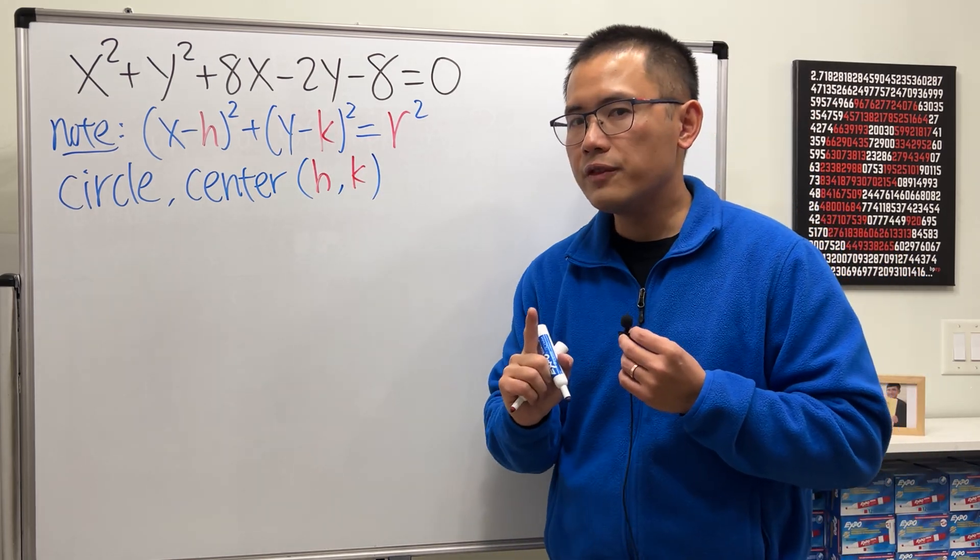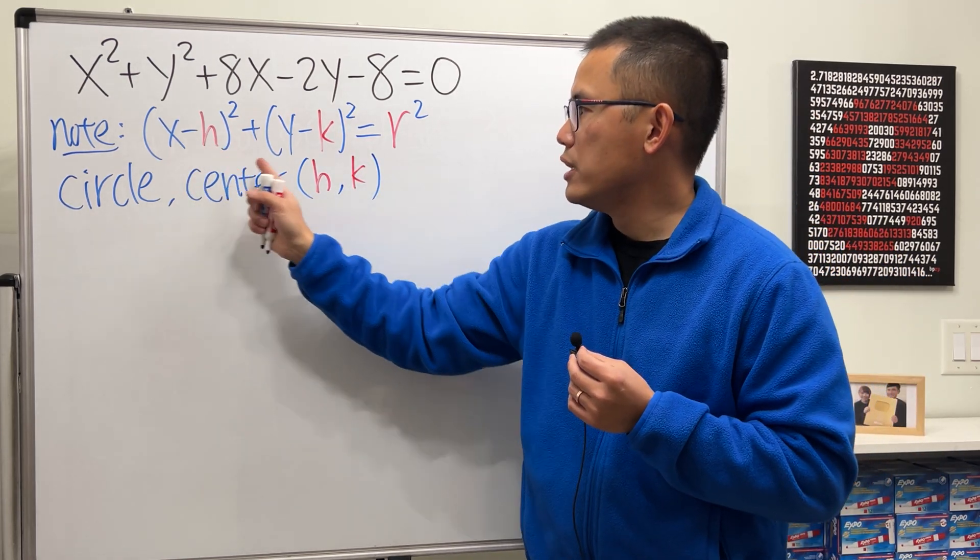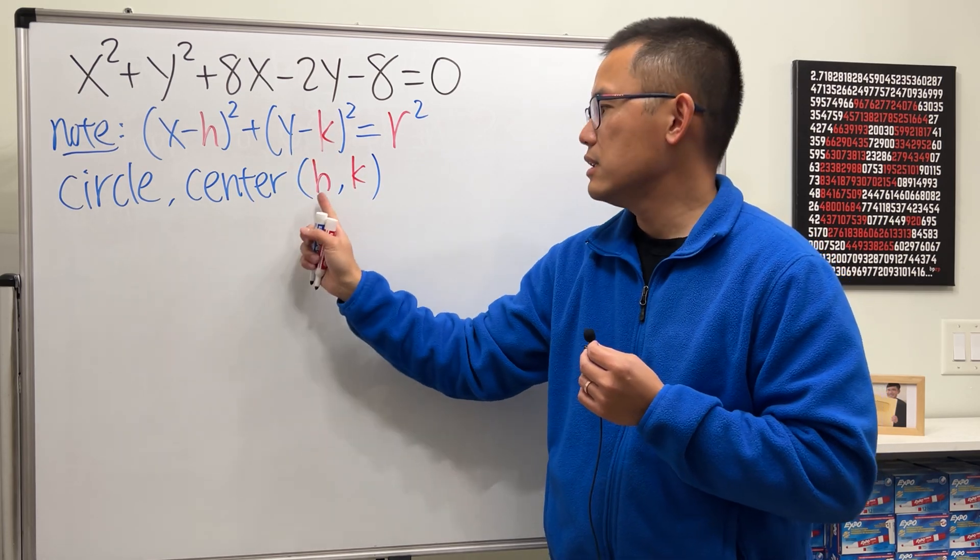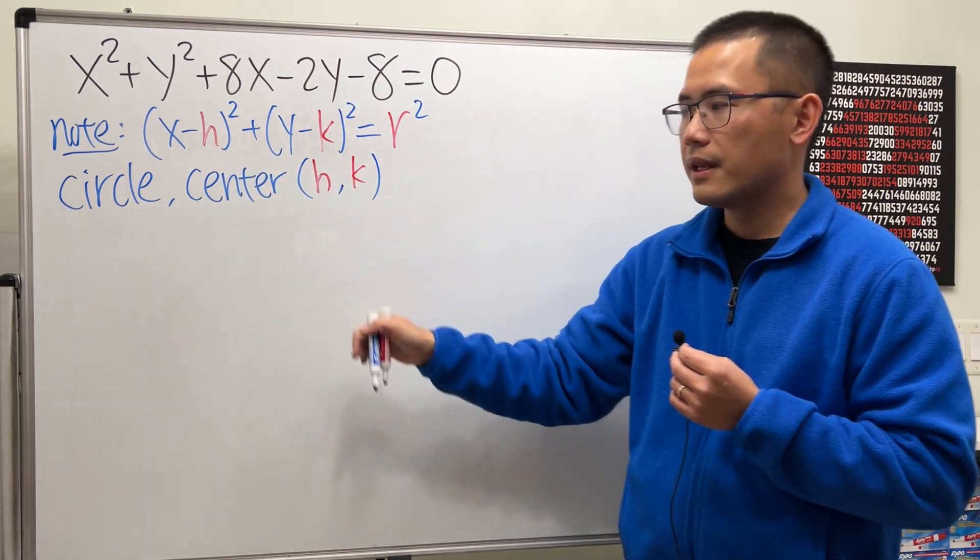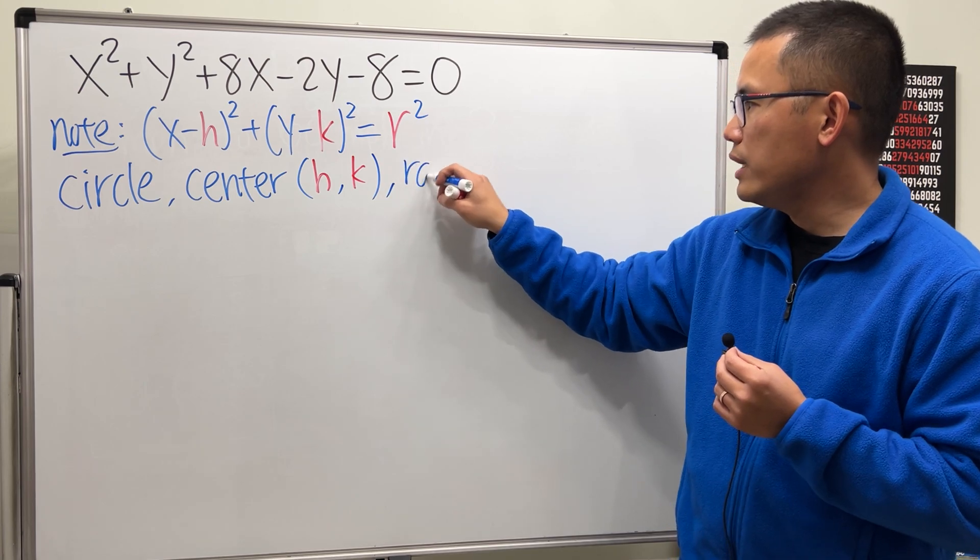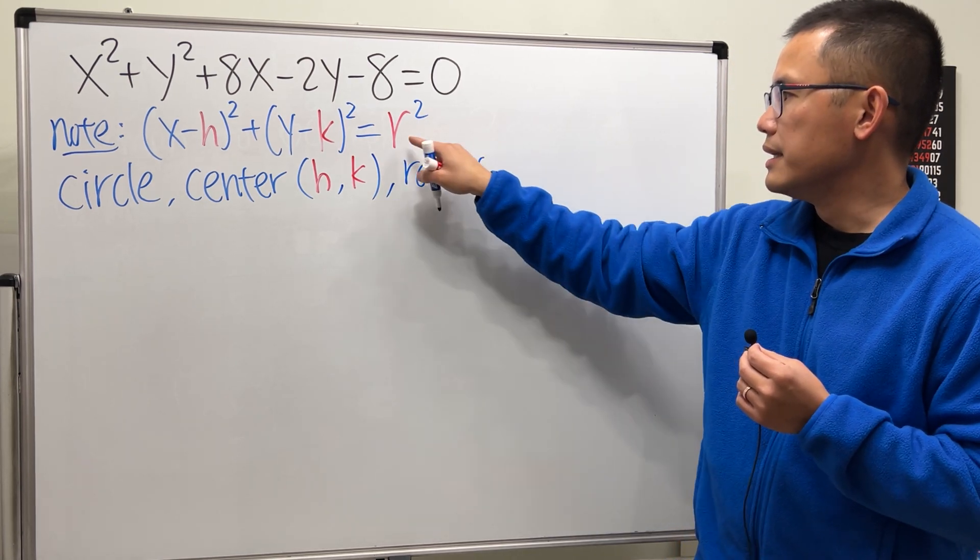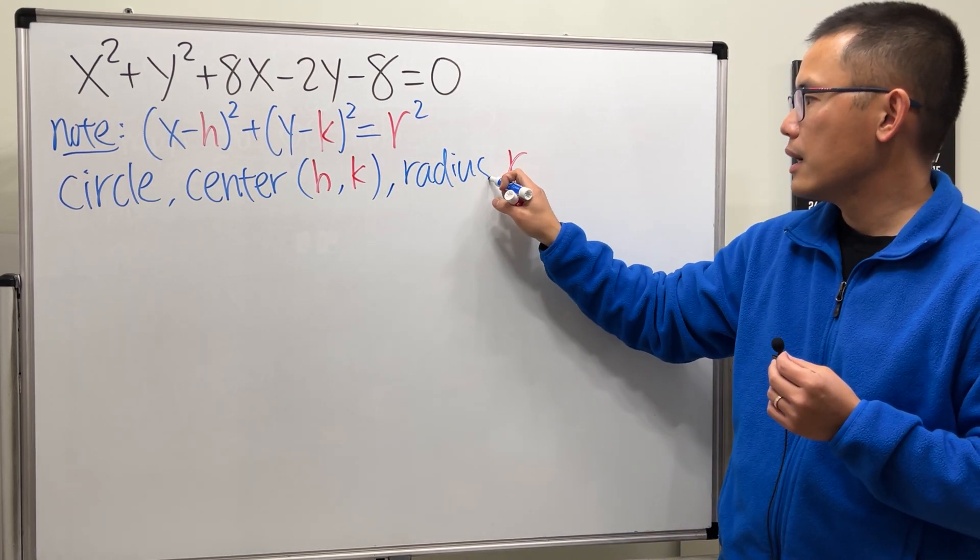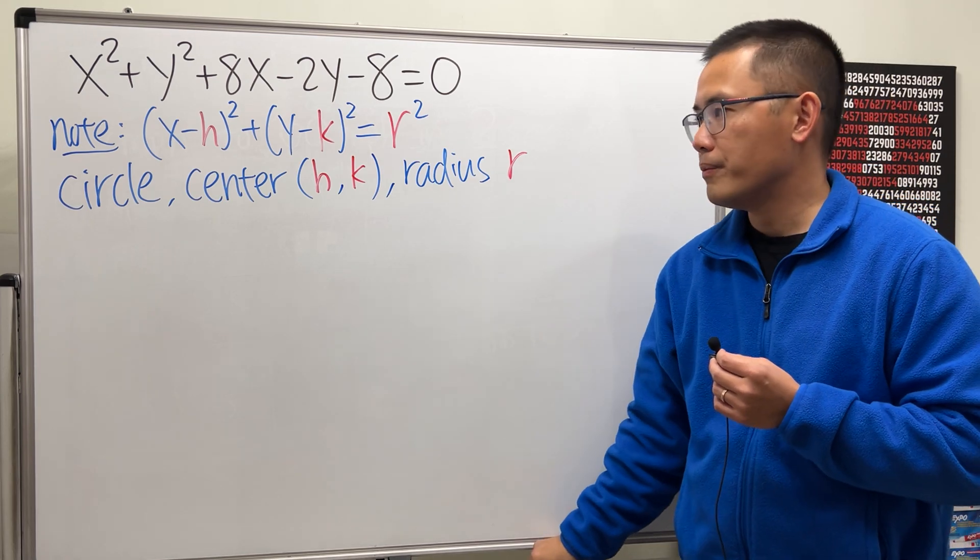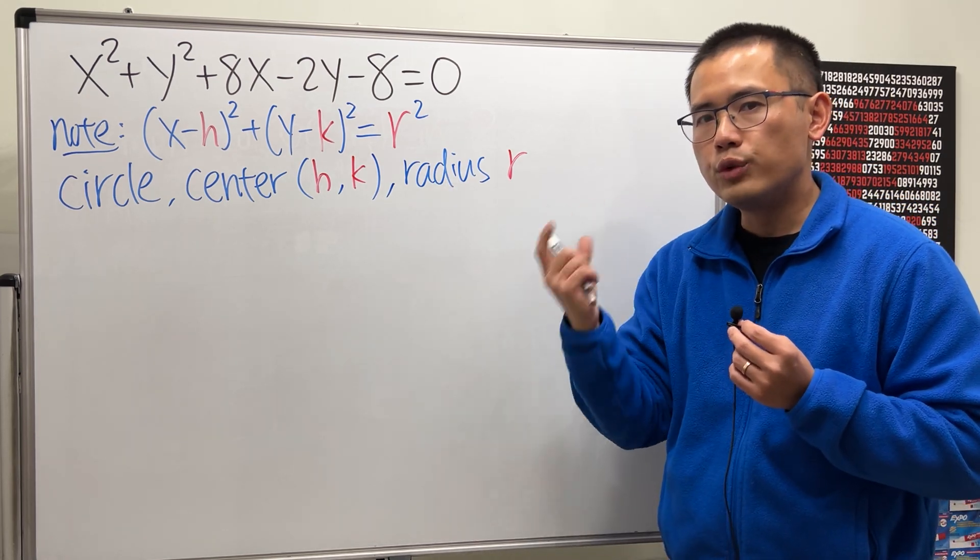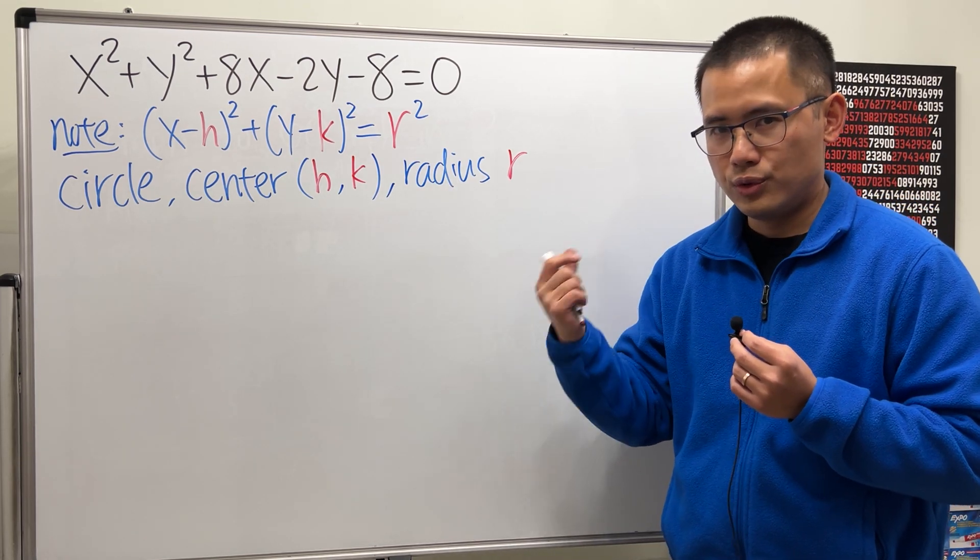And one thing to be careful though, you have the negative h here, and then the negative k here, but the center is (h, k). And we also know the radius is r. And once you know the center of the circle and the radius of the circle, you can graph the circle.